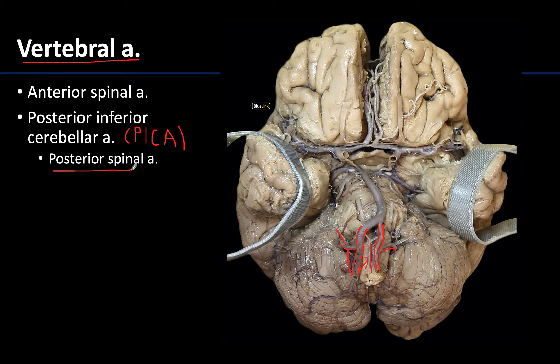You are not going to be able to see the posterior spinal artery very well in this view — you would have to see it on the posterior view, but you can see them peeking out right about here. One thing to note: there are typically two posterior spinal arteries, whereas there is typically just one anterior spinal artery.